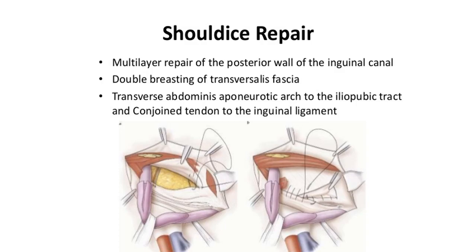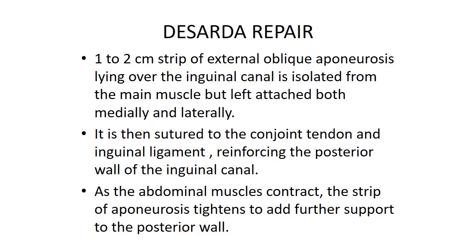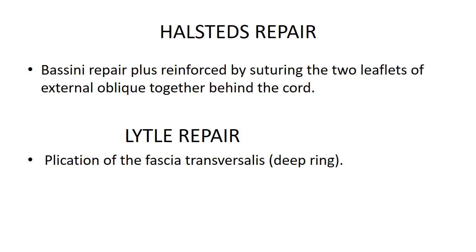Shouldice repair: a 1–2 cm strip of external oblique aponeurosis lying over the inguinal canal is isolated from the main muscle but left attached both medially and laterally. It is then sutured to the conjoined tendon and inguinal ligament, reinforcing the posterior wall of the inguinal canal. As the abdominal muscles contract, the strip of aponeurosis tightens to add further support to the posterior wall. Halstead's repair is Bassini repair plus reinforcement by suturing the two leaflets of external oblique together behind the cord. Lytle repair involves plication of the fascia transversalis at the deep ring.